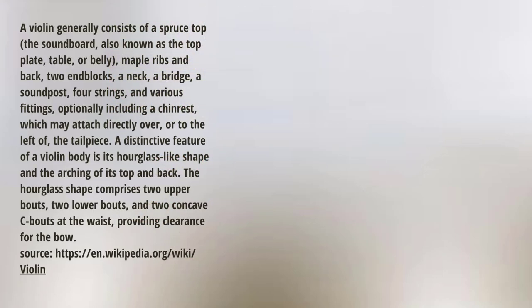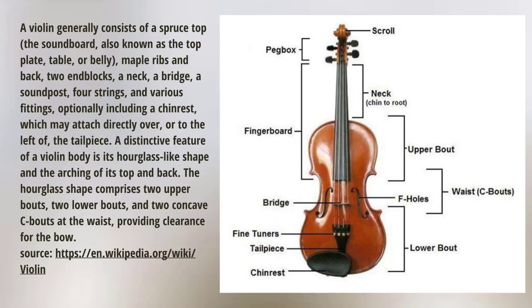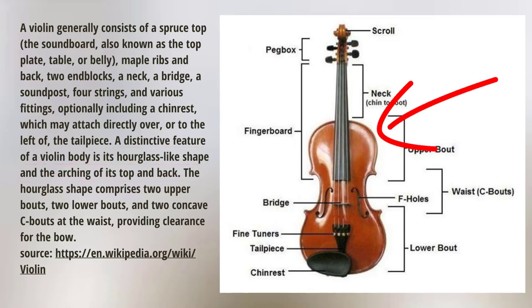Here's a description from Wikipedia about the composition and structure of a violin — copied and pasted. Just look at the concept of presenting all those words to describe a violin. Now take this image — it has fewer words but seems to convey more information. I don't have to tell people that a distinctive feature of a violin body is its hourglass-like shape and the arching of its top and back — you can actually see that. That's not to say you should never have text or narrative, but maybe supplement it with pictures. We're always looking for the most effective way to present the content.